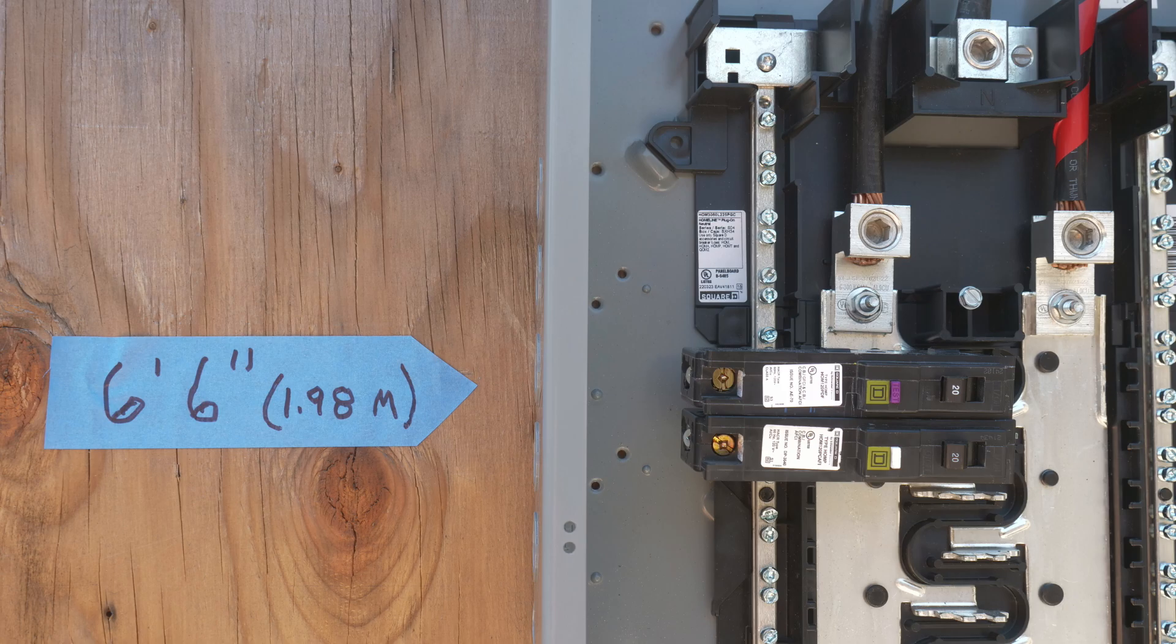As for this panel, for example, since the highest circuit breaker is 6 foot 6 inches off the floor and there is no main breaker, then it would pass as far as height is concerned. However, if it was 2 inches higher it wouldn't. Thanks, I hope this video was helpful.